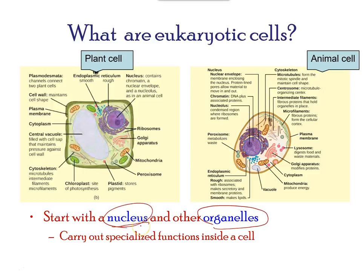A eukaryotic cell is a cell that has a membrane-bound nucleus and other membrane-bound components or sacs called organelles, which have specialized functions. The word 'eukaryotic' means 'true kernel' or 'true nucleus,' alluding to the presence of the membrane-bound nucleus. The term 'organelle' means 'little organ,' and organelles have specialized cellular functions, just as the organs of your body have specialized functions. Eukaryotes have a more complex structure than prokaryotic cells.